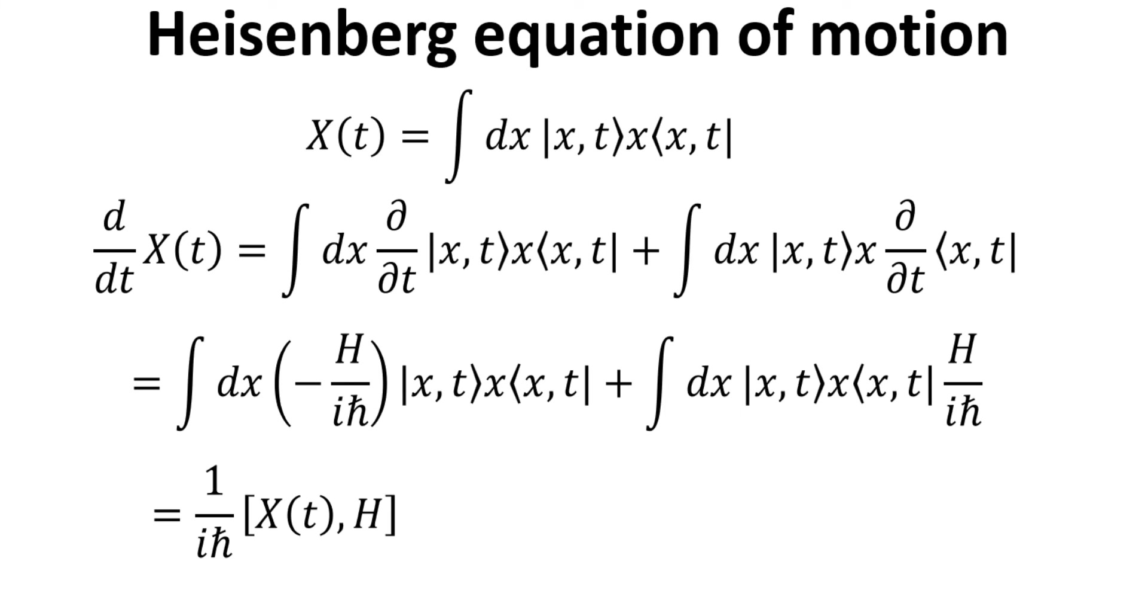Let's first write down the expression of the position operator in its spectral decomposition, and then take the time derivative of the position operator. Time derivative of the outer product can be performed using the product rule. The time derivative of the x bra and ket can be replaced by the Hamiltonian as according to the Schrödinger equation we showed a few slides earlier. Rearranging the terms will allow us to write the time derivative of the x operator as commutator of x with the Hamiltonian H.